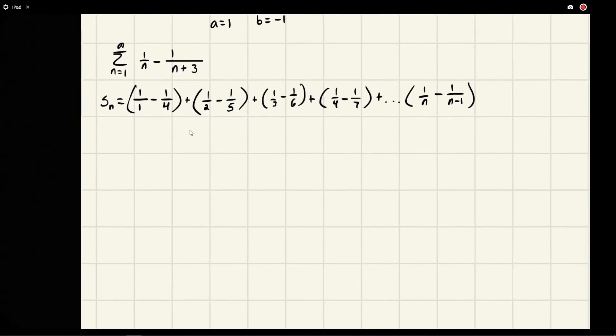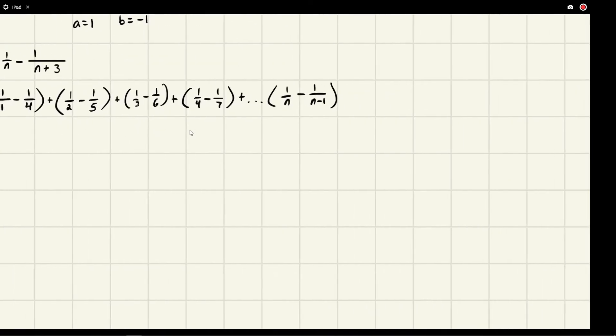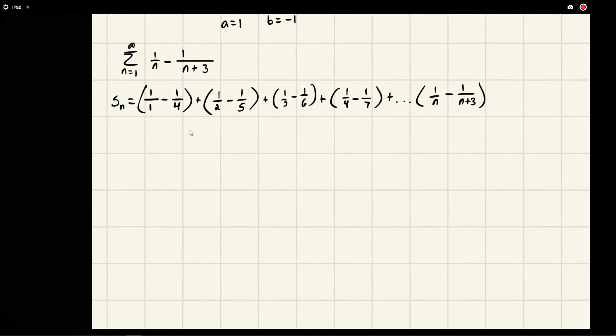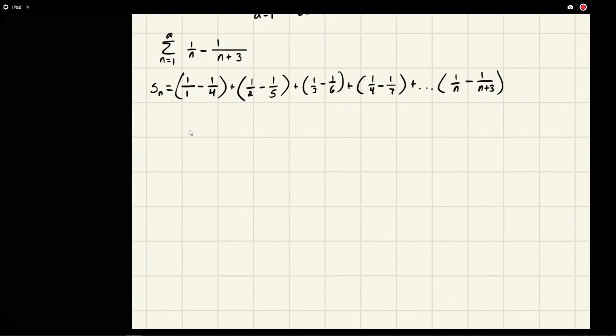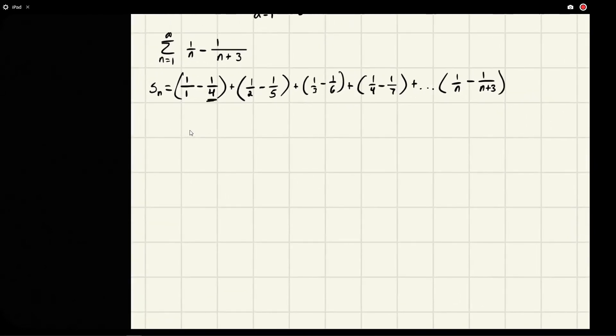Until we get 1 over n minus 1 over n plus 3. I want to write minus 1 for some reason. So okay, we got 1 plus 3. So we see that the plus 3 just basically offset this.